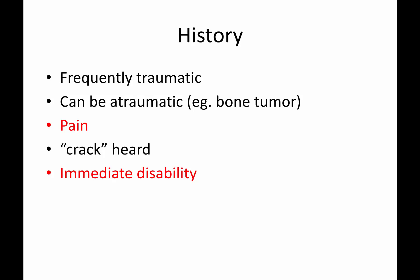Frequently the history is going to give some type of story about there being trauma, some kind of injury, but it could be atraumatic. So if you have a bone tumor or if you have abnormal bone, someone can come in with what otherwise seems to be a fracture but there was no trauma. When that's the case, you have to suspect maybe there was some type of pathologic process that allowed this fracture to occur in the first place.